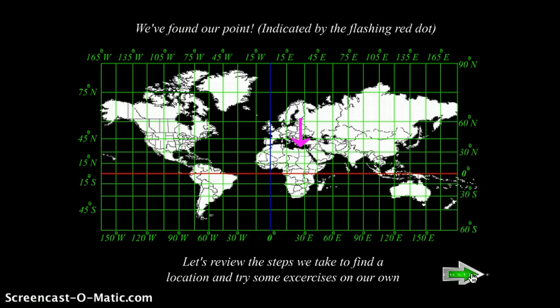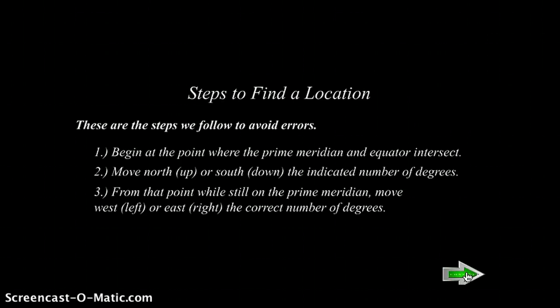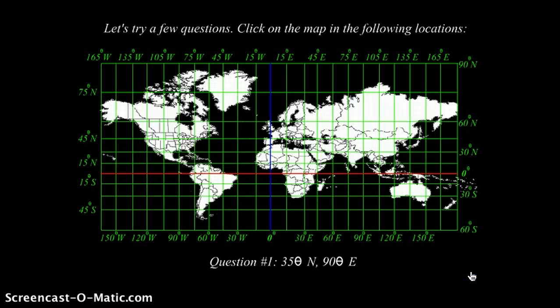Let's review the steps we take to find a location and try some exercises of our own. Steps to find a location: Number 1, begin at the point where the prime meridian and the equator intersect. Number 2, move north, which is up, or south, which is down, the indicated number of degrees. From that point, while still on the prime meridian, move west to the left or east to the right, the number of degrees.